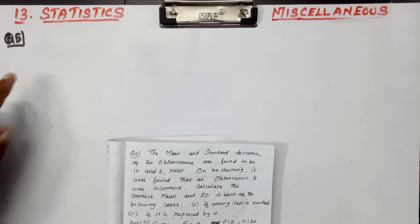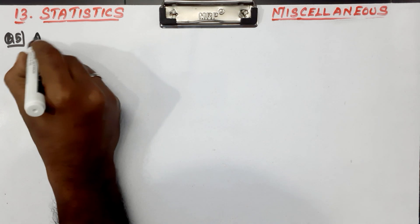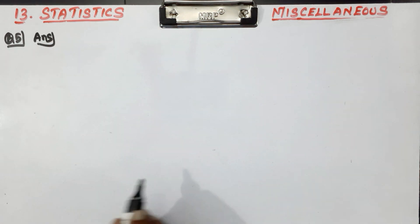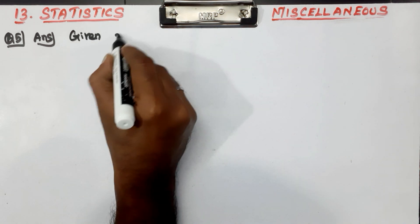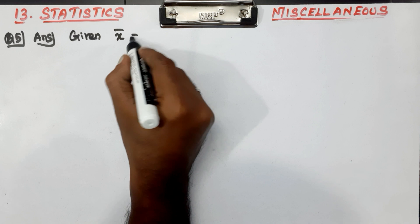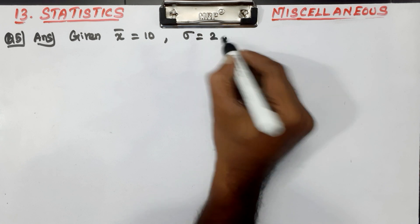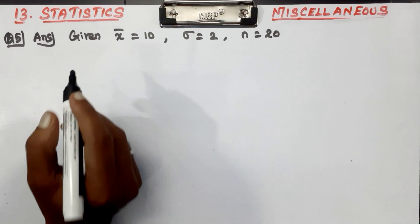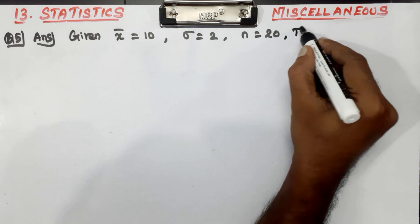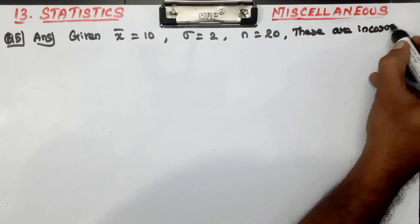So now we will go to the answer. Question 5 answer. What is the given? Given: x-bar (mean) = 10, standard deviation sigma = 2, n (number of observations) = 20. These are incorrect data.